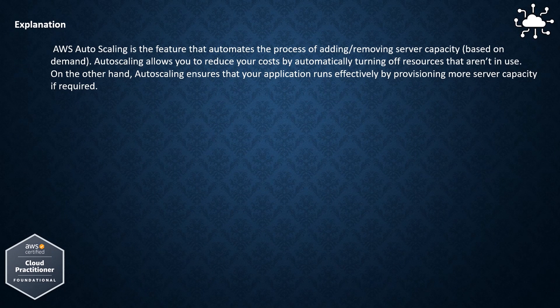AWS Autoscaling allows you to reduce your costs by automatically turning off resources that aren't in use. On the other hand, autoscaling ensures that your application runs effectively by provisioning more server capacity if required.